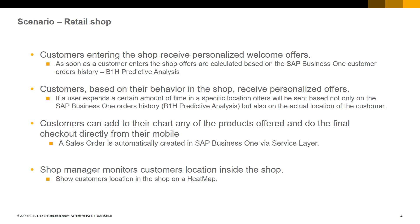In our retail shop, several scenarios are implemented. As soon as a customer enters the shop, he receives a set of offers based on his SAP Business One customer orders history. If a user spends a certain amount of time in a specific location, offers will be sent to the user based not only on the SAP Business One orders history but also on the actual location of the customer. Customers can add to their shopping cart any of the products offered and do the final checkout directly from their mobile.